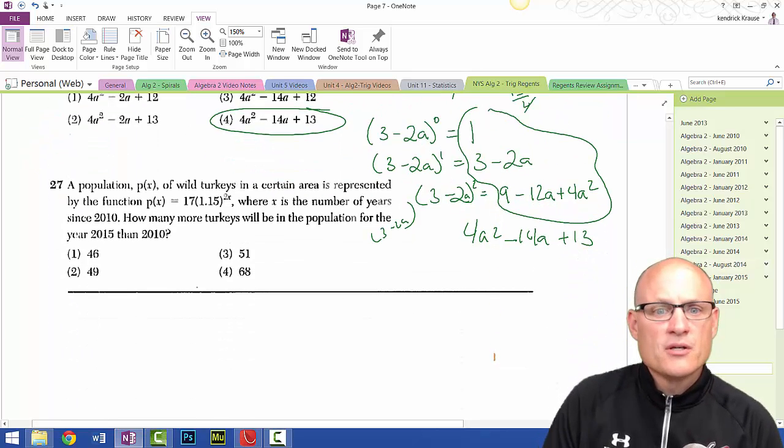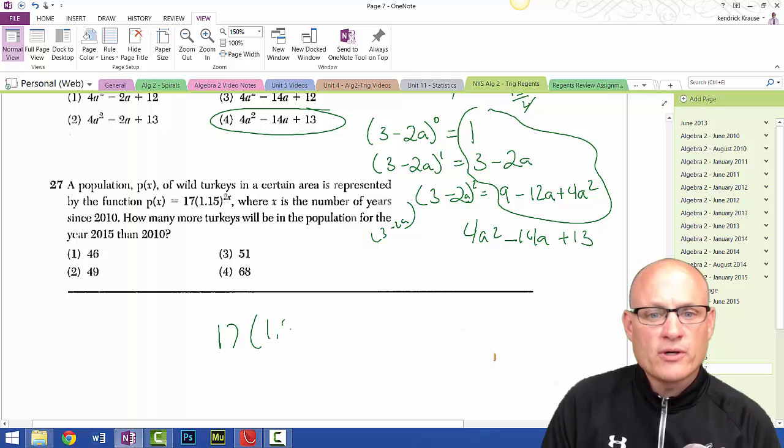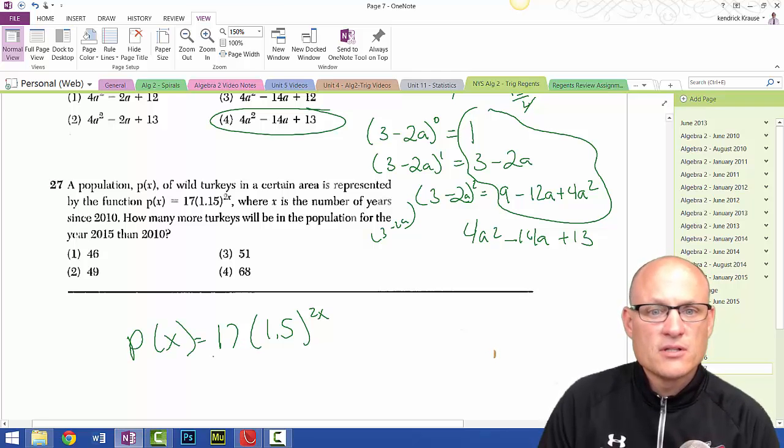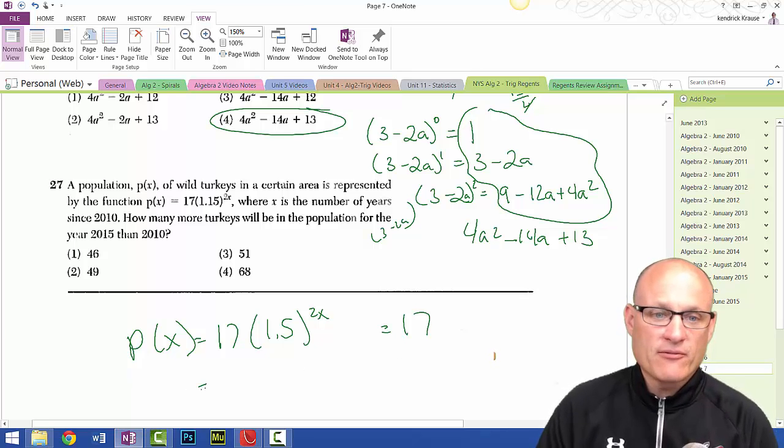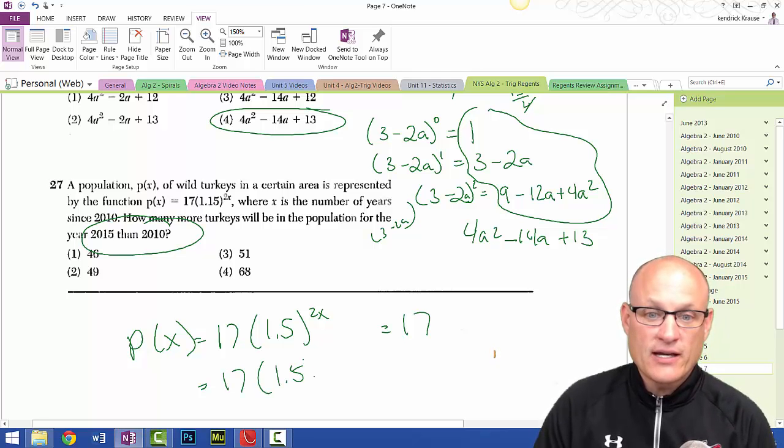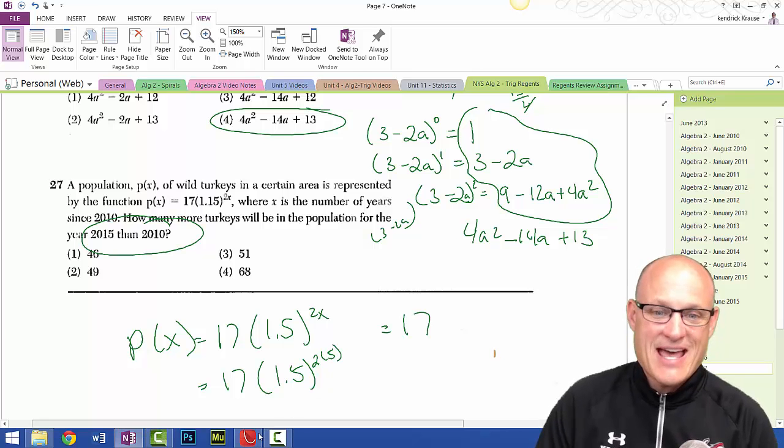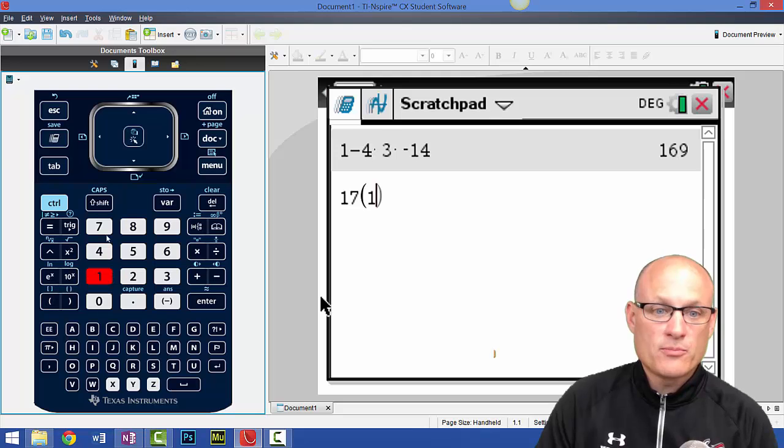Question 27, last problem: We got 17 times 1.5 to the 2x equals P of x, where x is the number of years since 2010. How many more turkeys will be in the population for the year 2015 than 2010? Well, in 2010 the answer is just 17. You plug in a 0, you get 17. But for 2015, we got to plug in 5 because the difference between these is 5 years. So 17, 1.5 to the 2 times 5, which is the 10.